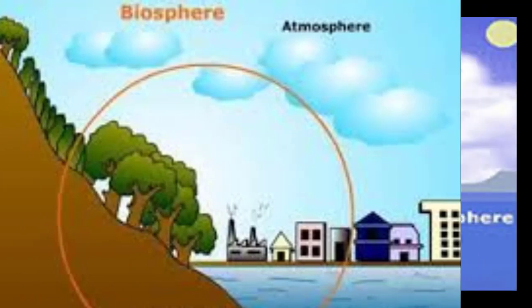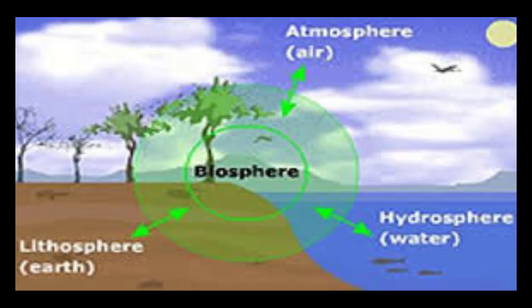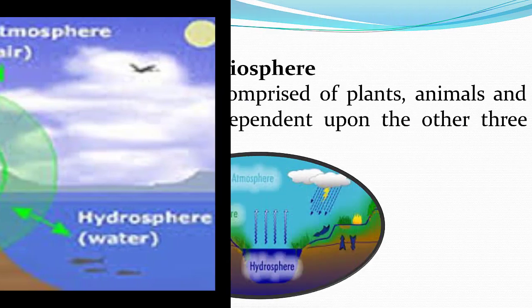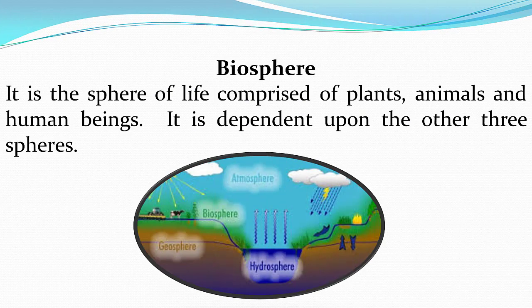An example of biosphere is where life occurs on, above, and below the surface of Earth. The part of the Earth and its atmosphere in which living organisms exist or that is capable of supporting life — the sum total of land, water, and air present on the Earth — is called biosphere. It is the sum of all ecosystems and is also called the domain of life.